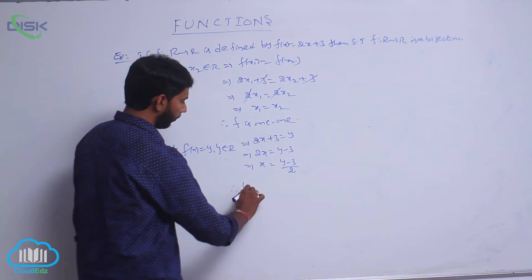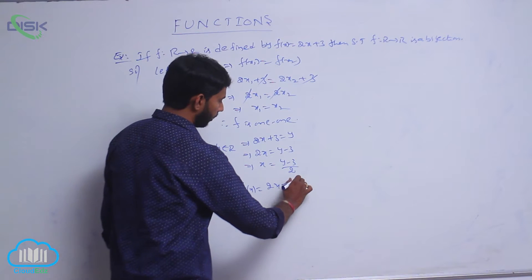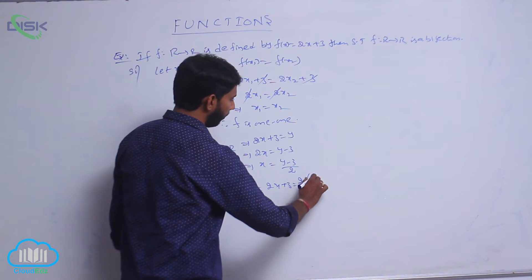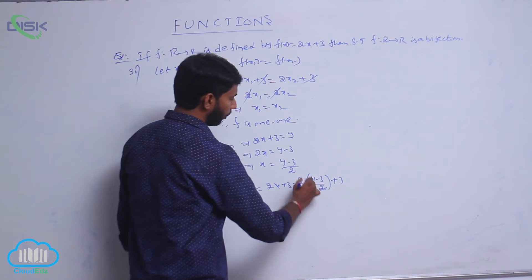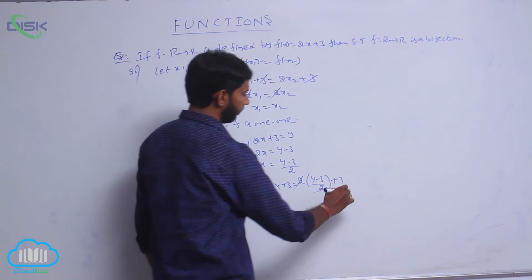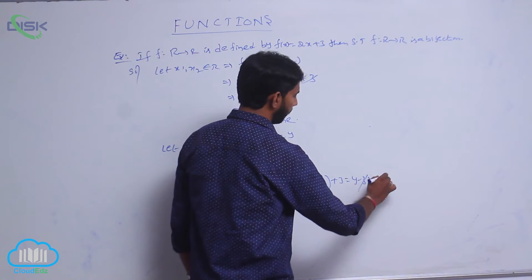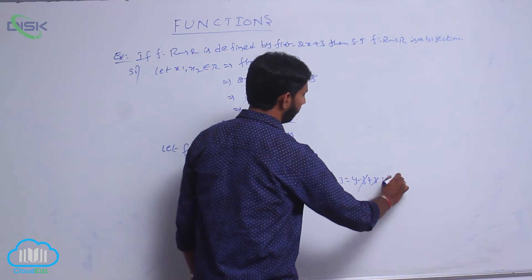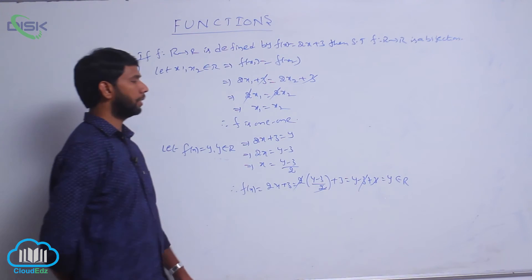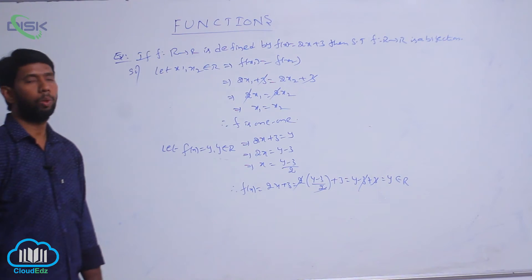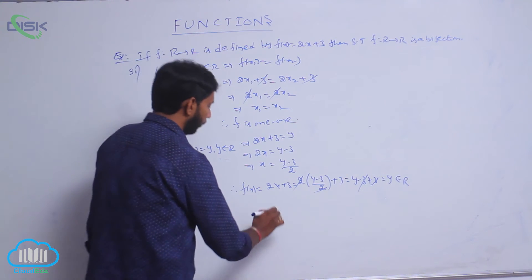Therefore, f of x is equal to 2x plus 3 equal to 2 of (y minus 3) by 2 plus 3. Here 2 and 2 get cancelled, it is y minus 3 plus 3. Here 3 and 3 cancel, it is equal to y, that belongs to R. That means the range of the function is equal to the codomain, that is f of x is equal to y.